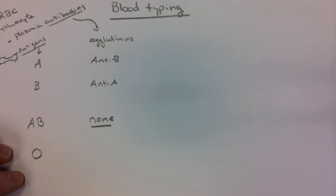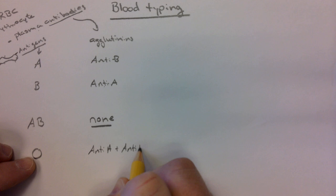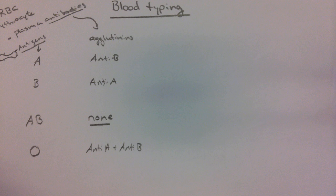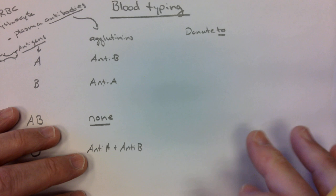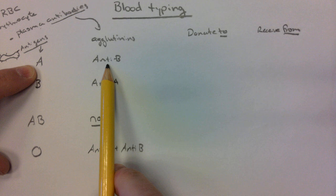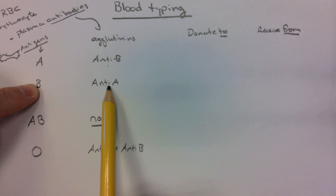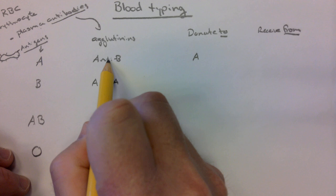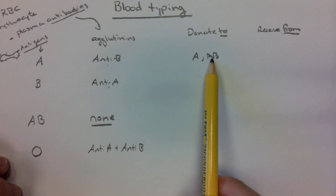For type O, they don't have either antigen, so they're going to have both anti-A and anti-B. That sets us up for donation rules. A blood has anti-B, so we cannot donate any type of A blood to somebody who's B, and anybody who is B cannot receive A blood because they have anti-A. So A can donate to A blood because they match, and A can also donate to AB blood because there's no anti-A present in those agglutinins.